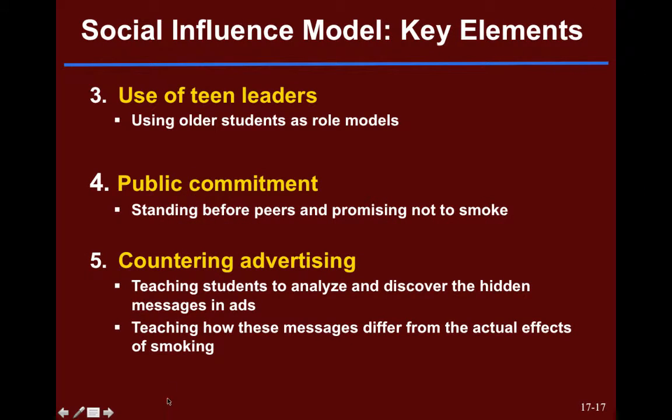Other focuses of the Truth campaign included the advertising methods that tobacco companies were using — their tools to recruit teens and hook them for life. The social influence model took those advertising strategies, exposed them to teens, and taught them how the messages differed from the actual effects of smoking. Typical smoking commercials made it look glamorous. The social influence model is evidence-based and research-driven, built from what actually worked in keeping teens from becoming tobacco users, then applied to prevent other kinds of substance use.